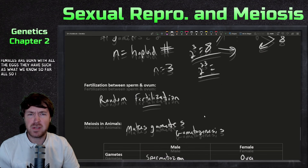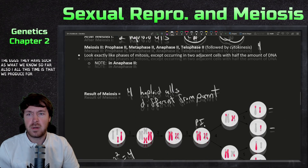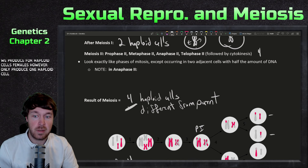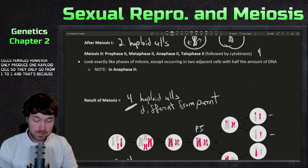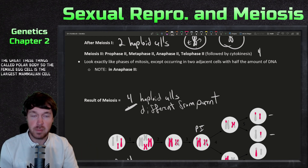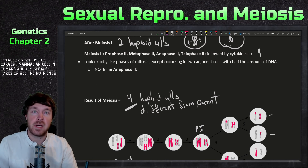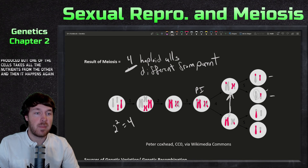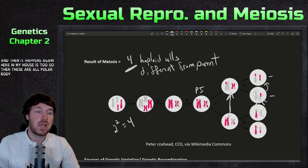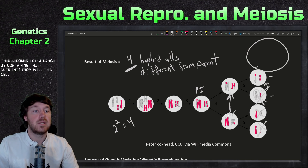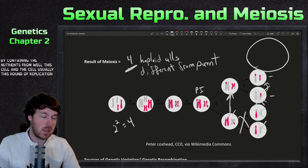These terms will come back up when we talk about the different stages where things differ between males and females. Females arrest at a certain stage of meiosis and sit there for a while; males are constantly producing sperm throughout their life. Females are born with all the eggs they'll ever have. Also, while meiosis generally produces four haploid cells, females only produce one haploid cell because they create polar bodies — the egg cell takes up all the nutrients and cytoplasm from the other cells, which then degrade.